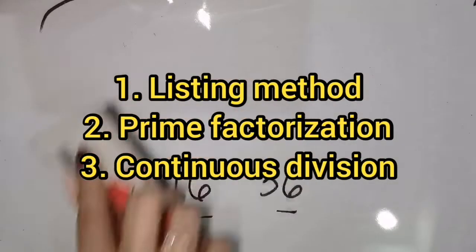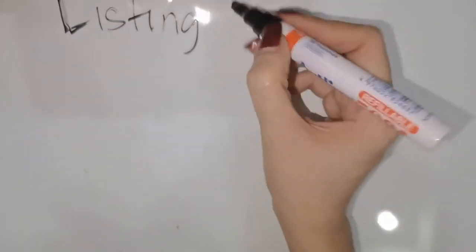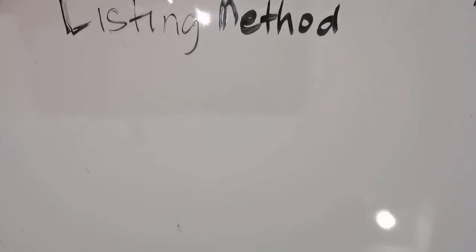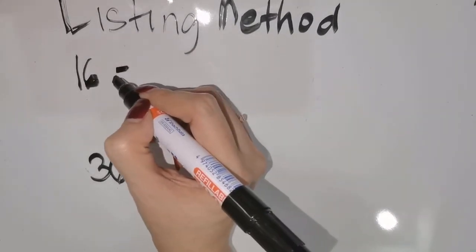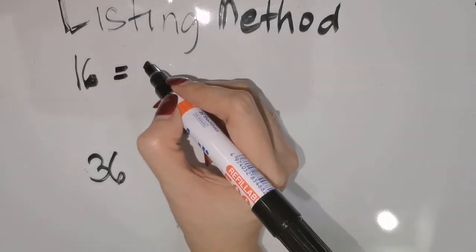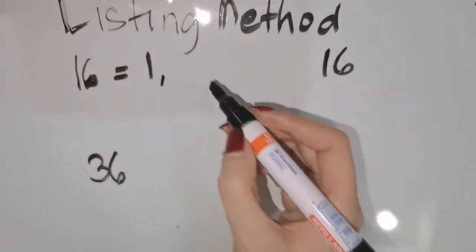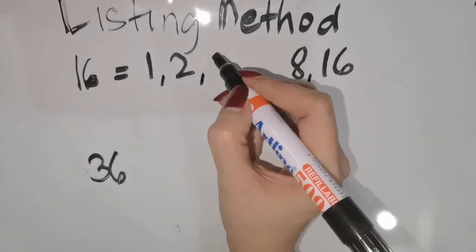Okay, let's go over the listing method first. In the listing method, you will list down all the factors of each number. Let's take the same example: 16 and 36. For 16, what are the factors? We have 1 times 16, then 2 times 8, and 4 times 4.